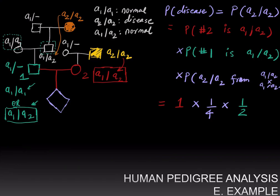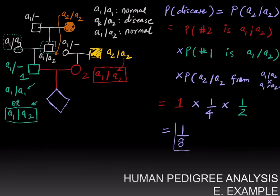We can then multiply these fractions to obtain the probability of this child having the rare kidney disease, assuming the paternal grandmother is homozygous for A1 — because we were told the disease is rare. We conclude that the probability is one times one-half times one-quarter, which equals one-eighth.